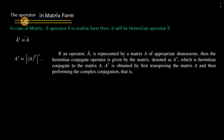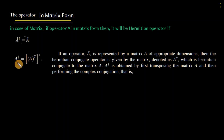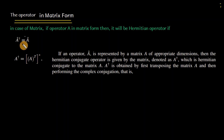In quantum mechanics, operators are sometimes expressed in matrix form. In that case, to check whether a matrix operator is Hermitian, we use: A† = A, where A† (Hermitian conjugate or dagger operator) = (A^T)*, meaning take the transpose of the matrix then take the complex conjugate. If the result equals A, the operator is Hermitian. If the expectation value of a Hermitian operator is real.